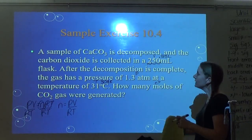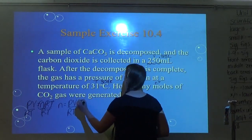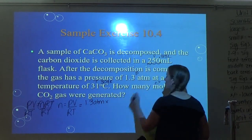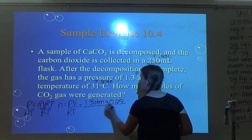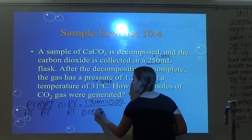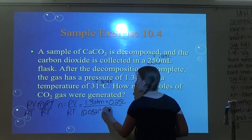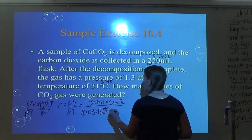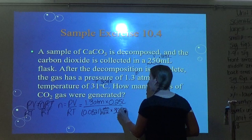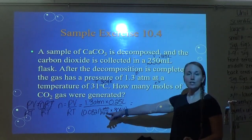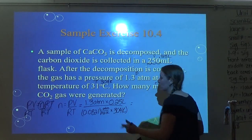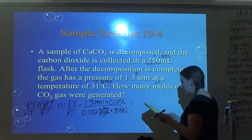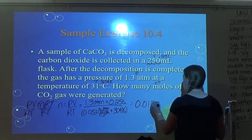Now with correct units, I plug in: pressure is 1.38 atm, volume is 0.25 liters, R is 0.0821 liters times atm over moles times Kelvin, and temperature is 304 Kelvin. Atm cancels, liters cancel, Kelvin cancels, and I'm left with moles. Once I do the math, I get 0.013 moles. They could then ask you to convert to grams using molar mass of CO2.